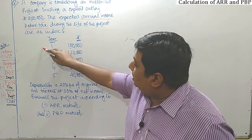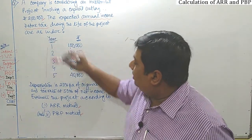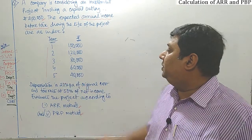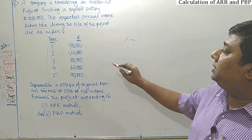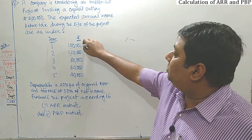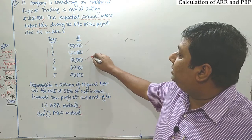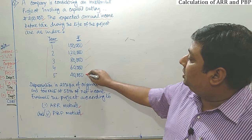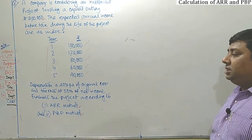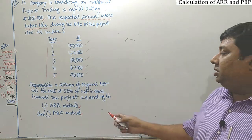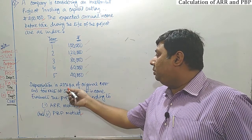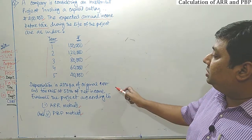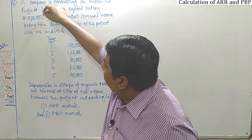The project has a life of 5 years. The income levels are: first year 1 lakh, second year 1 lakh 20,000, third year 1 lakh 80,000, fourth year 1 lakh 60,000, fifth year 40,000. Depreciation is 20 percent per annum of original cost. The original cost is 2 lakh rupees.